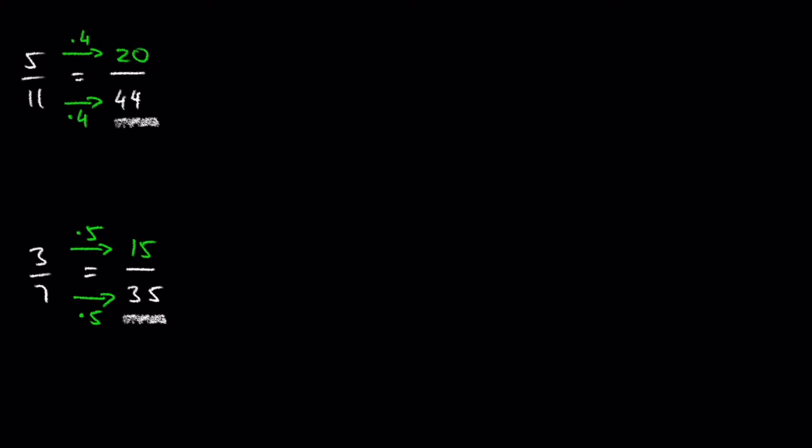We see that dividing 15 by 5 and 35 dividing by 5 results in our original fraction. Remember, raising fractions to higher terms is the opposite of reducing fractions to lower terms.